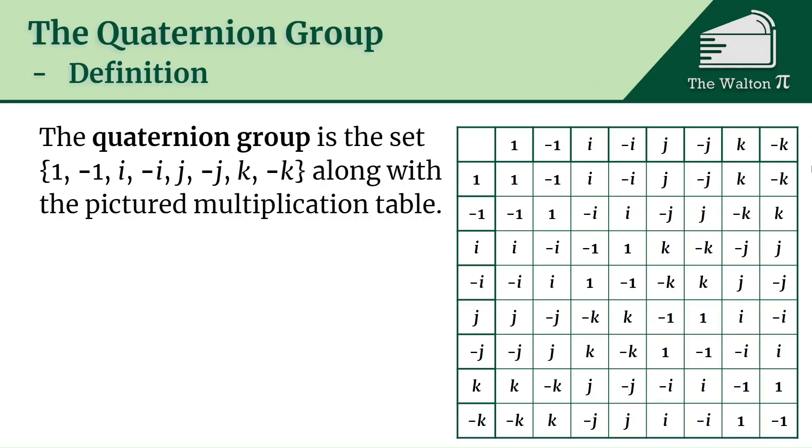So the quaternion group is the set 1, negative 1, i, negative i, j, negative j, k, and negative k along with the pictured multiplication table.